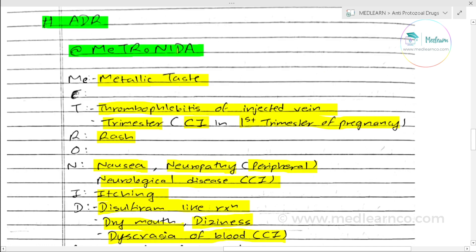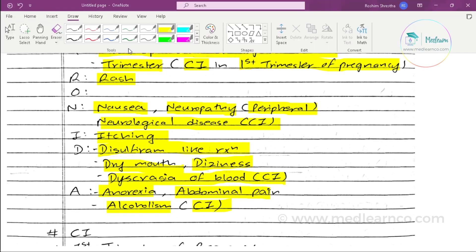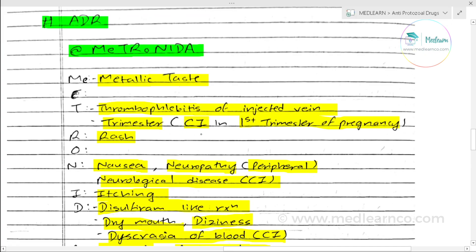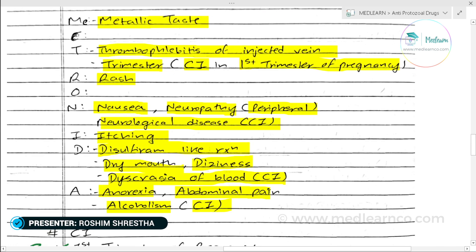A stands for anorexia or abdominal pain, and chronic alcoholism, which is also contraindicated. So, the contraindications for metronidazole are: first trimester of pregnancy, neurological disease including peripheral neuropathy, chronic alcoholism, and blood dyscrasia.